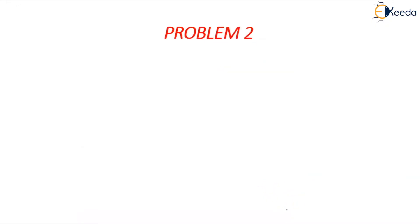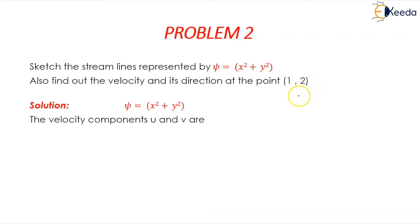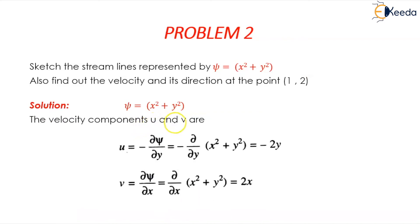The next problem states: sketch the streamlines represented by psi equals x squared plus y squared, and also find the velocity and its direction at the point (1, 2). The function is psi equals x squared plus y squared, and again we need the velocity components u and v.